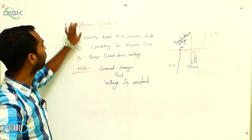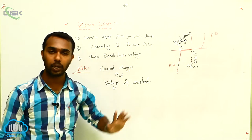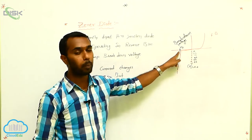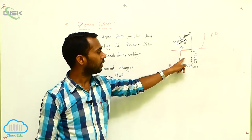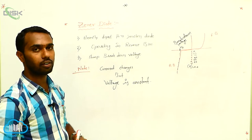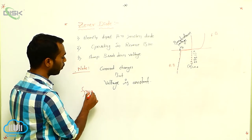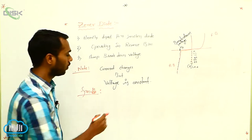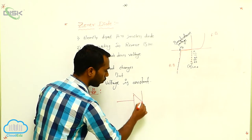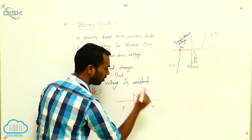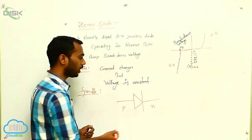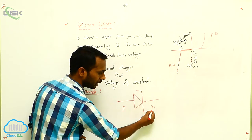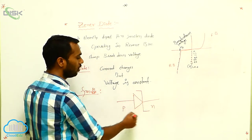This is the condition of the Zener diode. A Zener diode is a heavily doped p-n junction diode which is operating in reverse bias, and it has a sharp breakdown voltage. Now, what is the symbol? The symbol is the same as a p-n junction diode — this part is the P region, this part is the N region. The difference is this bar is in a curved Z shape, representing Zener. This arrow represents the conventional current direction. This is the symbol of a Zener diode.